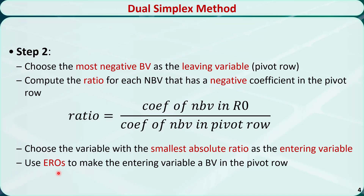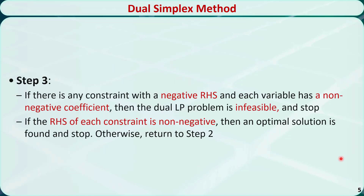In the dual simplex method, we determine the leaving variable first, then the entering variable, which is quite different from the regular or primal simplex method. In step 3, if there is any constraint with a negative right-hand side and each variable has a non-negative coefficient, then the dual linear programming problem is infeasible. If the right-hand side of each constraint is non-negative, then an optimal solution is found and we stop. Otherwise, return to step 2.